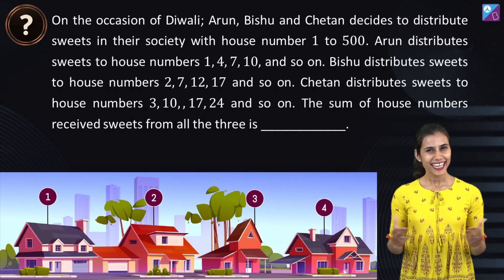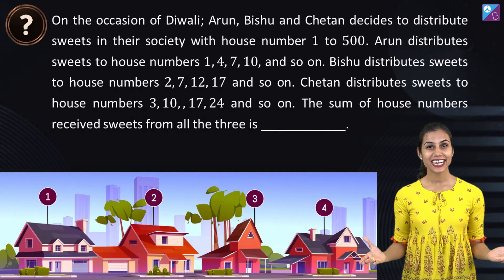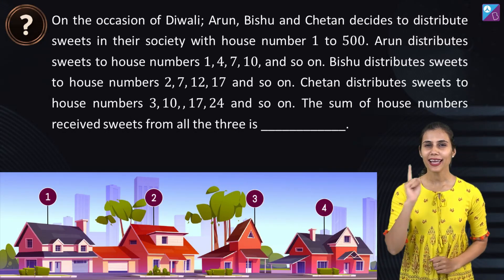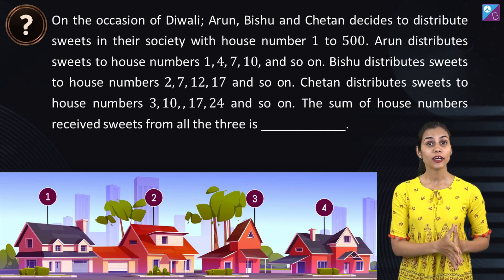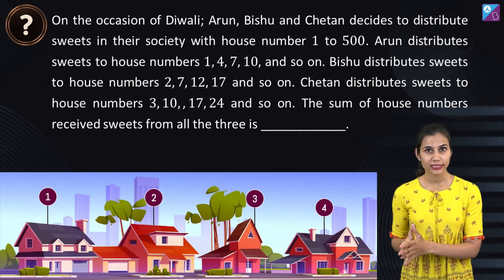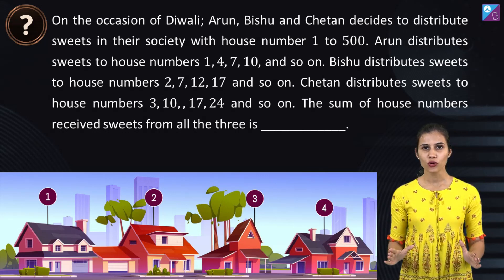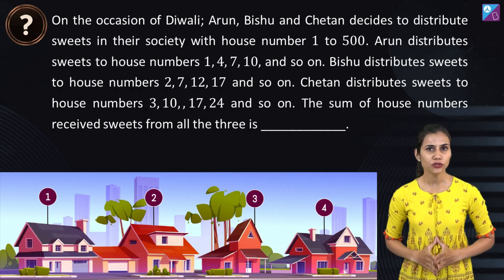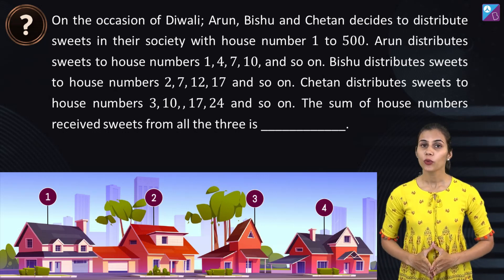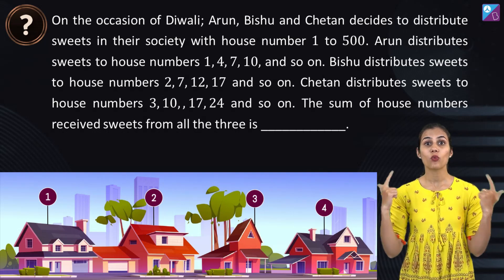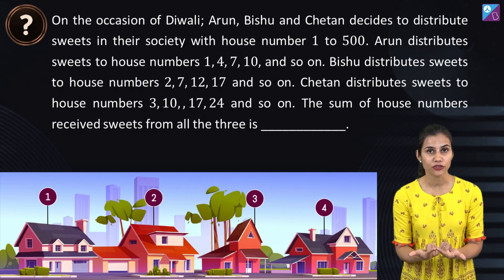Hi there everybody, it's Diwali time and that's why I have this question for you. Arun, Bishu and Chetan are three folks who decide to distribute sweets in a society with house numbers 1 to 500.